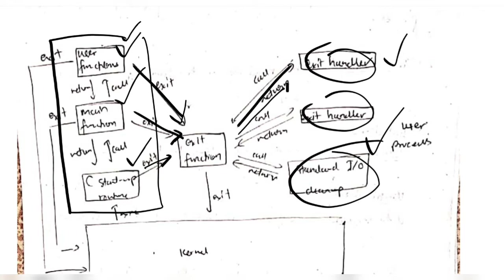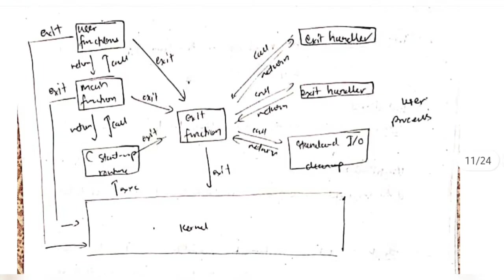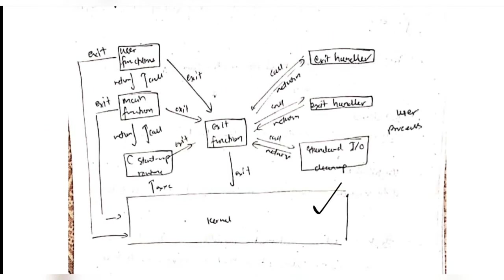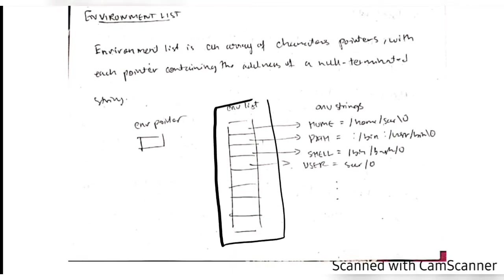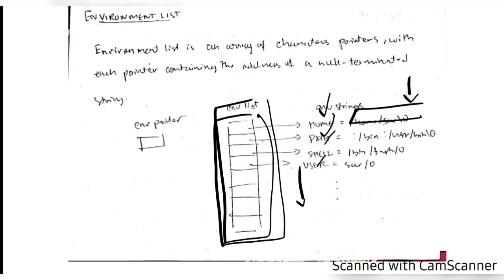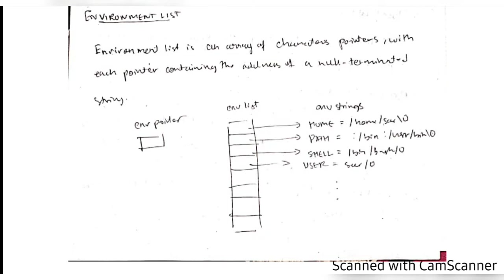When the process is over it should resume execution, so we have the return statement. Finally all are connected with the kernel for operation. Command line arguments specify what type of function you want to perform. The environment list is a list of all paths the system uses frequently, like the home path, shell, user, and so on. It ends with the null character and is stored in the form of a stack, with each block pointing to a separate environment variable.